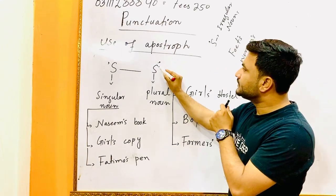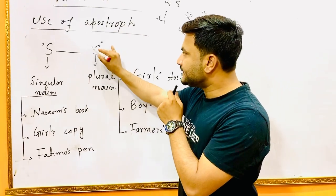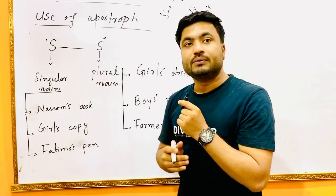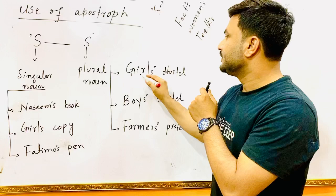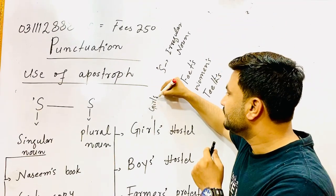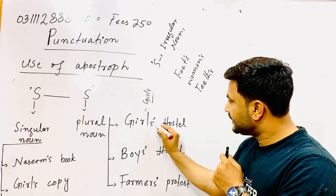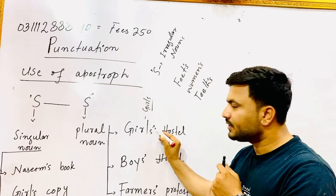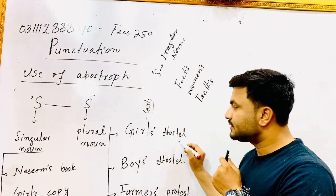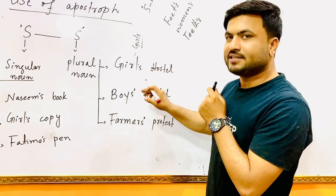When we put 's' then apostrophe, we use this apostrophe for plural nouns. For example, girls means there are many girls. You say girls' hostel, so you would say 's' then apostrophe. You would not say girls's hostel, that's wrong.